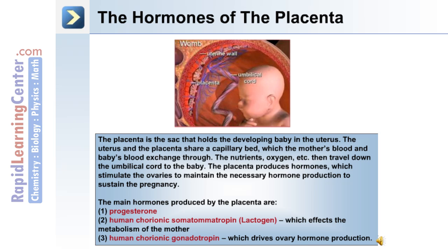The main hormones produced by the placenta are progesterone, human chorionic somatotropin, or lactogen, which affects the metabolism of the mother, and human chorionic gonadotropin, which drives ovary hormone production.